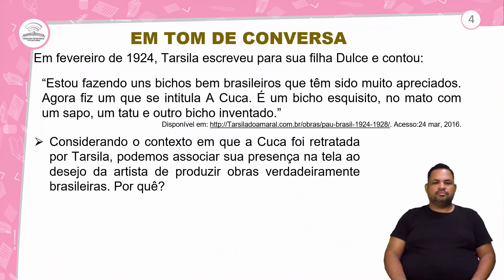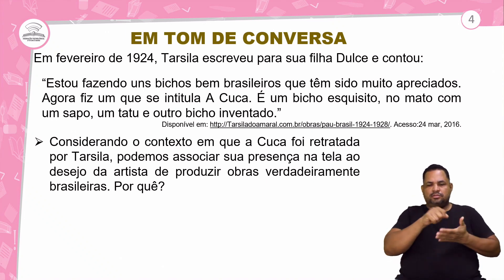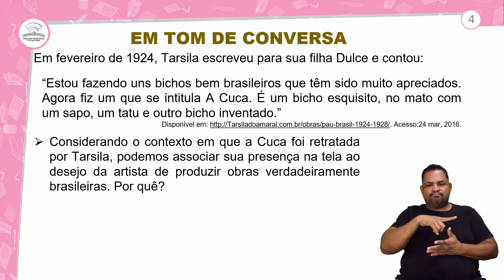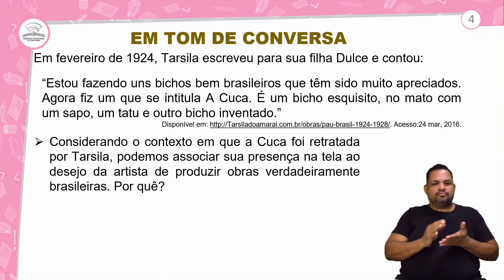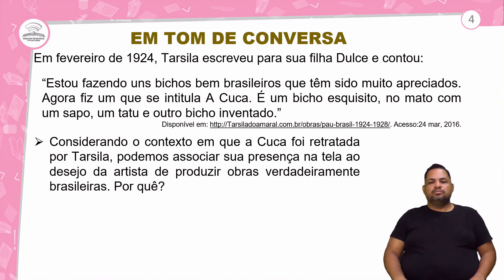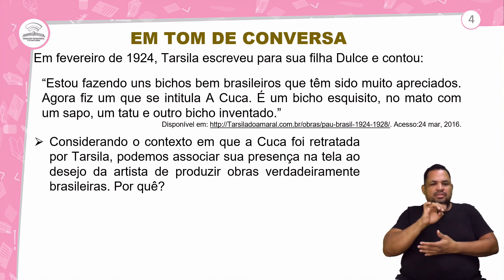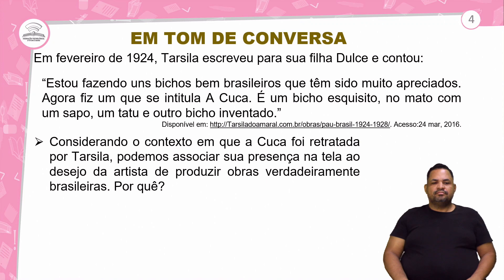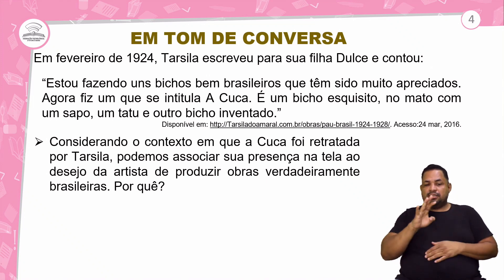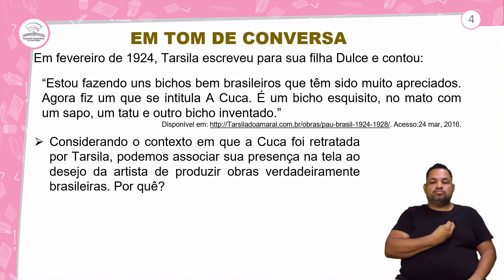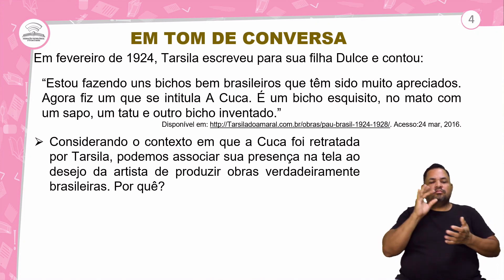Vamos lá para o nosso tom de conversa. Em fevereiro de 1924, Tarsila escreveu para sua filha Dulce e contou: 'Estou fazendo uns bichos bem brasileiros, que têm sido muito apreciados. Agora, fiz o que se intitula a Cuca. É um bicho esquisito, num mato, com sapo, um tatu e outro bicho inventado.'